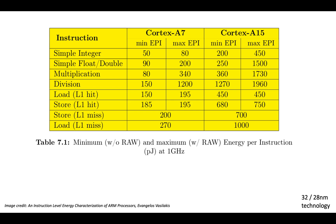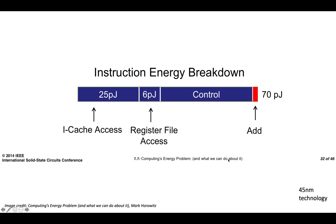For the cost of integer arithmetic — looking at 'An Energy Level Characterization of ARM Processors' by Evangelos Vasilakis — he found that the minimum and maximum energy per instruction at one gigahertz for the ARM Cortex A7 and A15 for simple integer operations was between 50 and 80 picojoules for the A7, and 200 to 450 picojoules for the A15, on either 32 or 28 nanometer technology. In Mark Horowitz's talk, 'Computing's Energy Problem and What We Can Do About It,' he gave a breakdown for a simple processor implemented in 45 nanometer technology and found that an integer add took about 70 picojoules, with the lion's share taken up by iCaches and control.